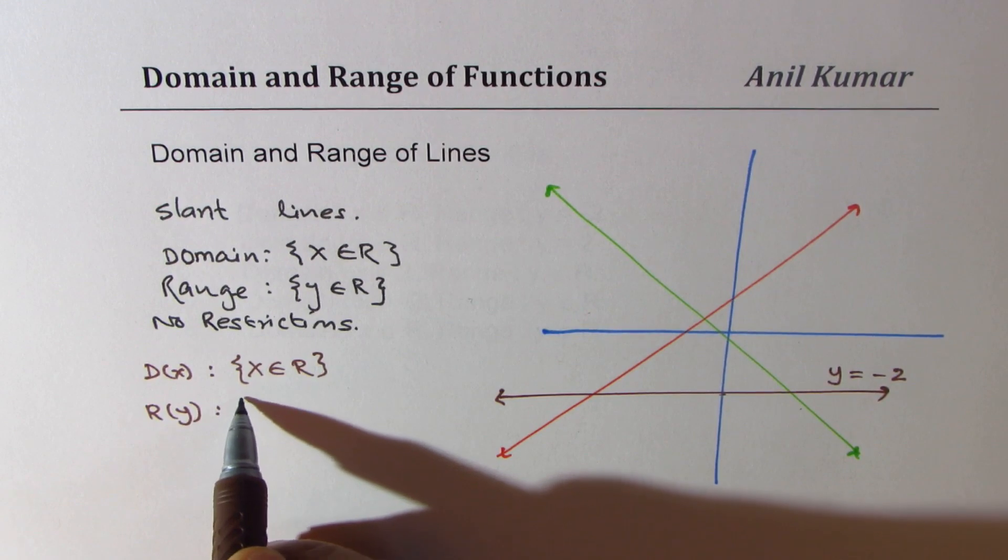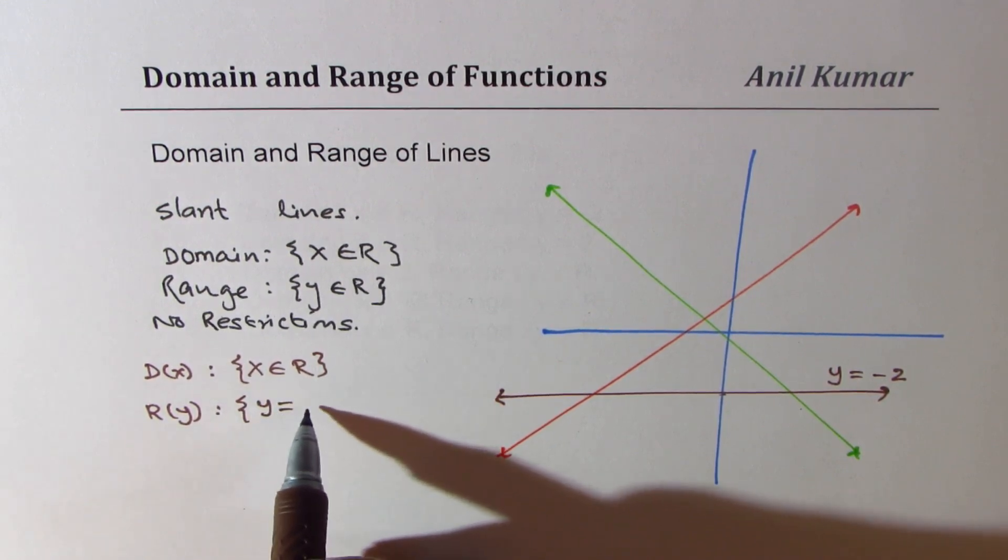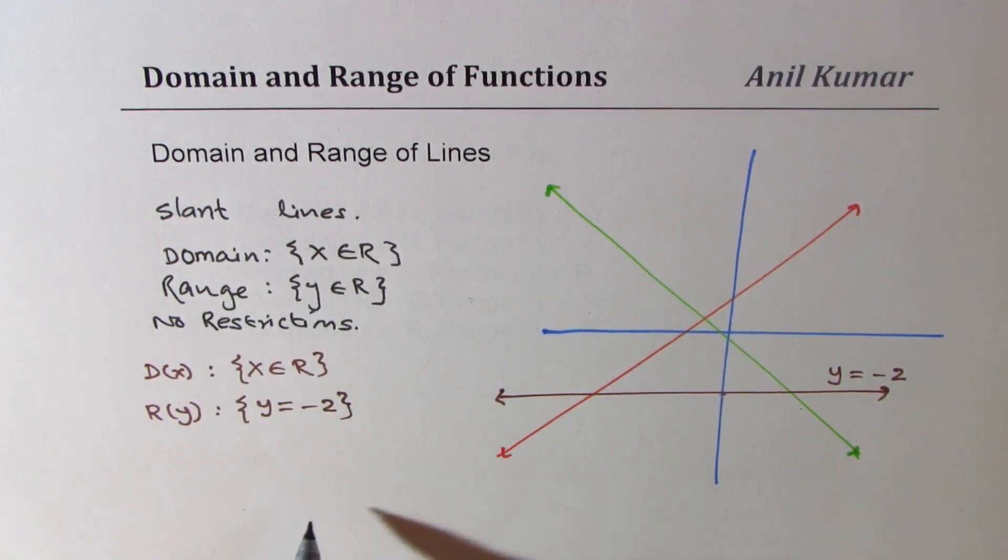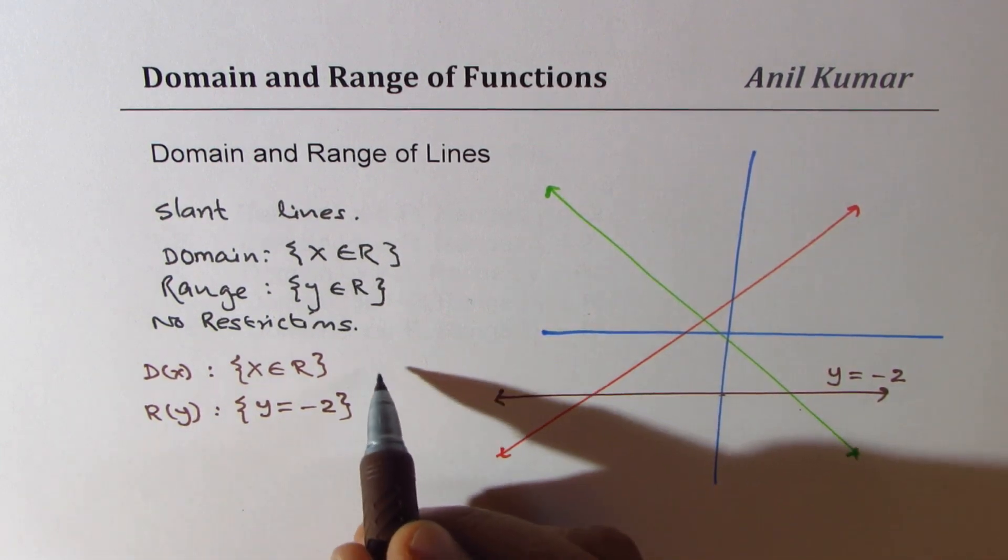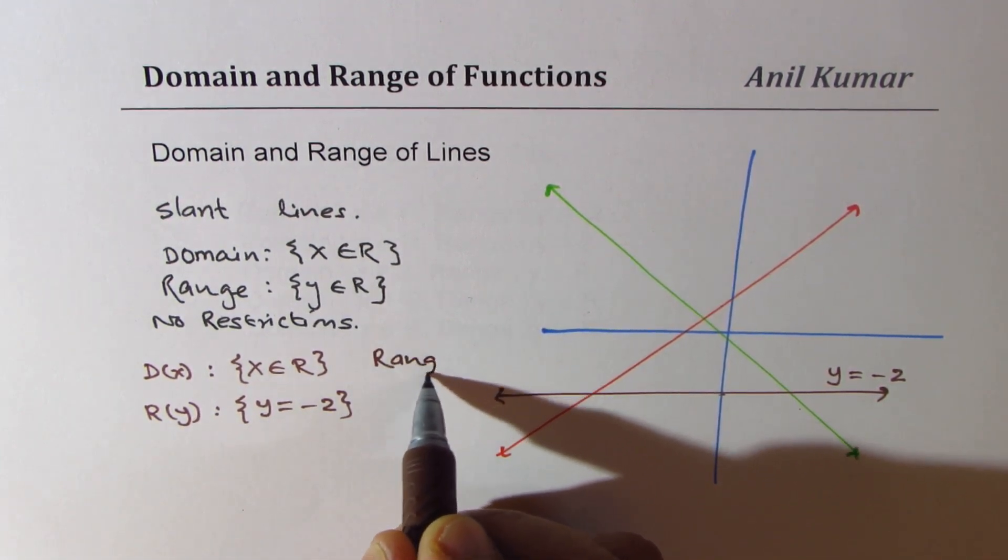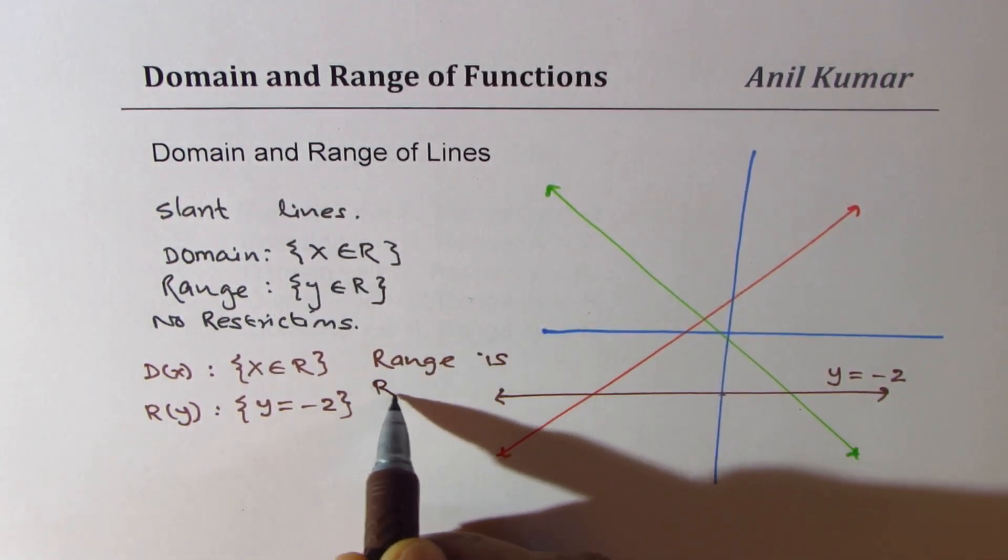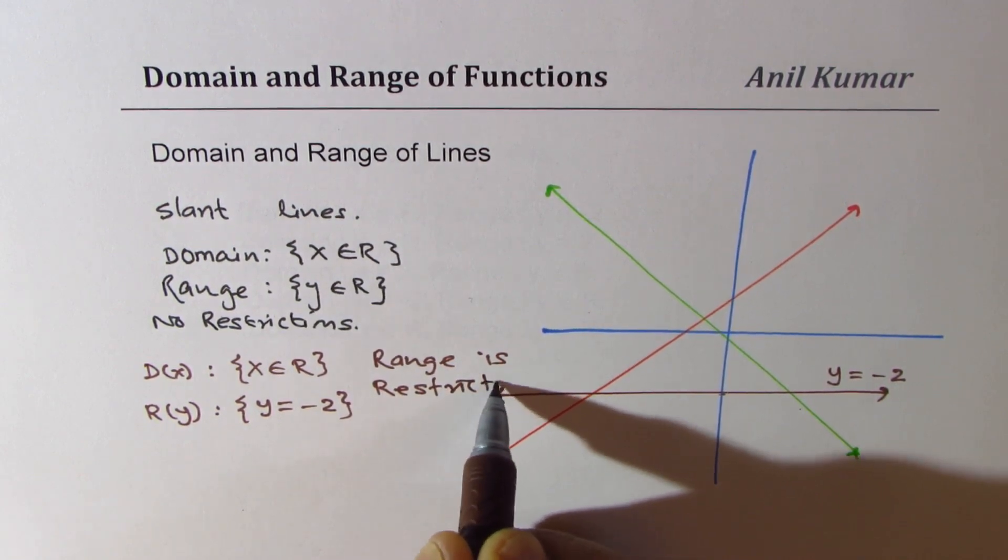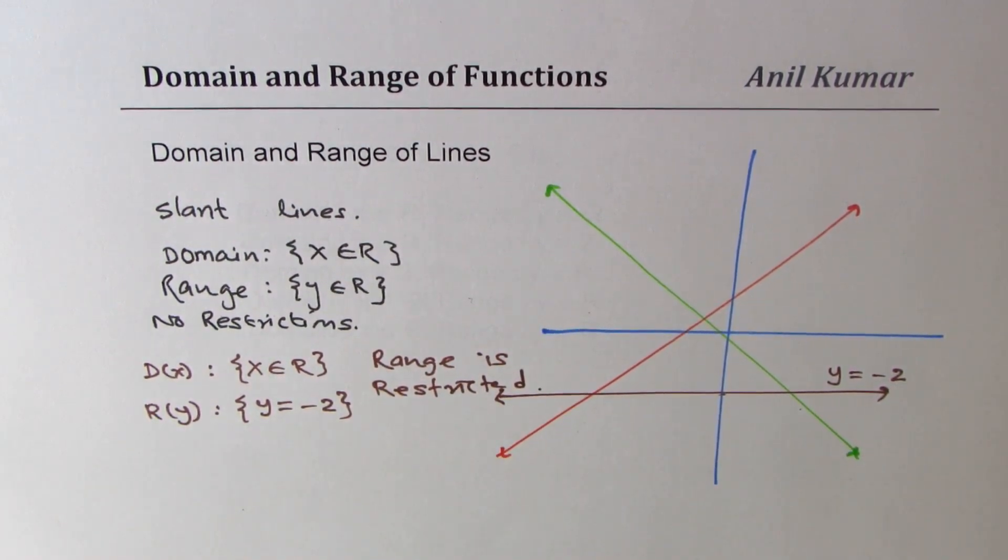Range is Y equals minus 2. Do you see that? So in this particular case we know that range is restricted. You see that, so you could have lines which have restricted range.